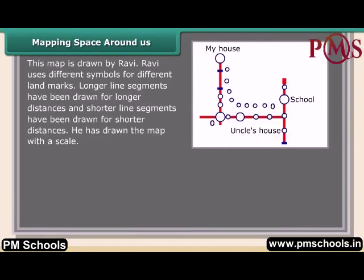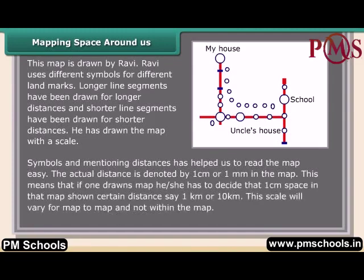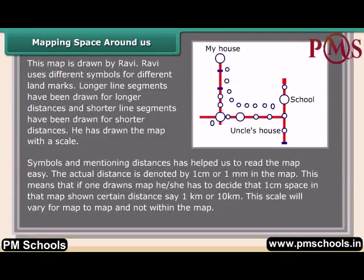This map is drawn by Ravi. Ravi uses different symbols for different landmarks. Longer line segments are drawn for longer distances and shorter line segments for shorter distances. He has drawn the map with a scale, symbols, and distances, which helps us read the map easily. The actual distance is denoted by one centimeter or one millimeter on the map. This scale will vary from map to map but not within the same map.